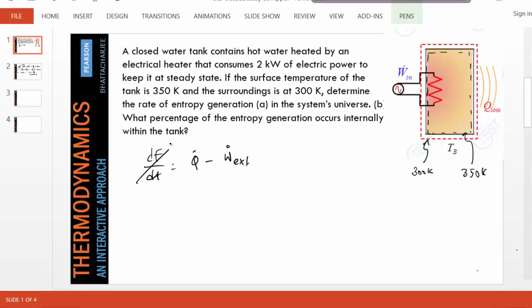dE/dt goes to zero at steady state, so zero equals Q̇ - let's just put Q̇. And what is Ẇ_external? In this problem it says it consumes 2 kilowatts, so 2 kilowatts is going in.